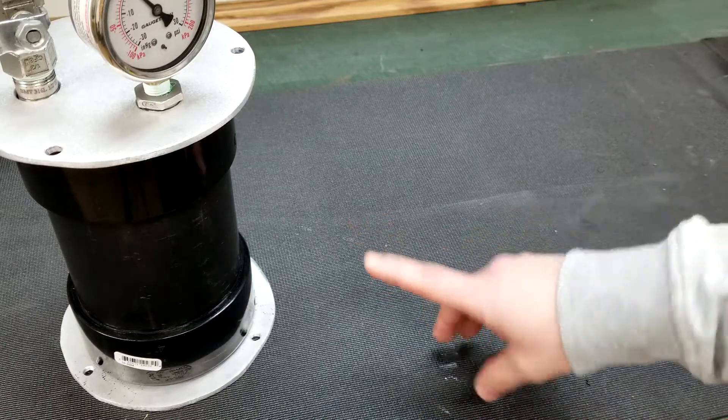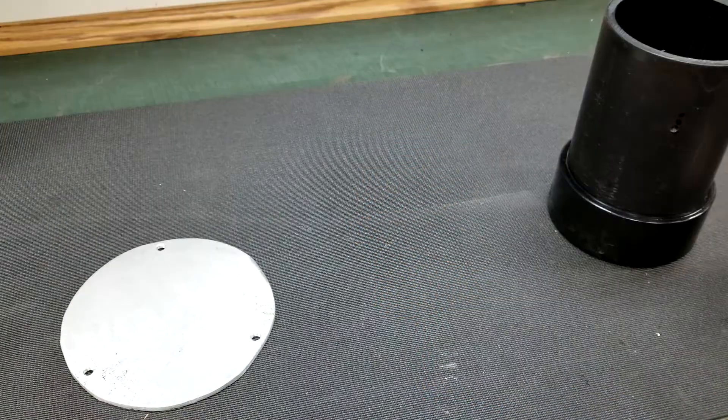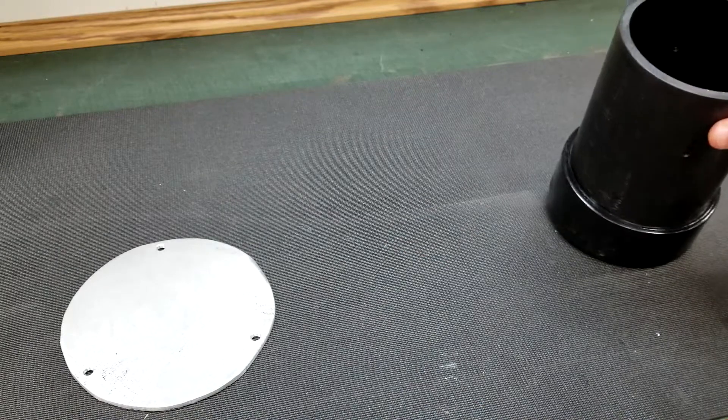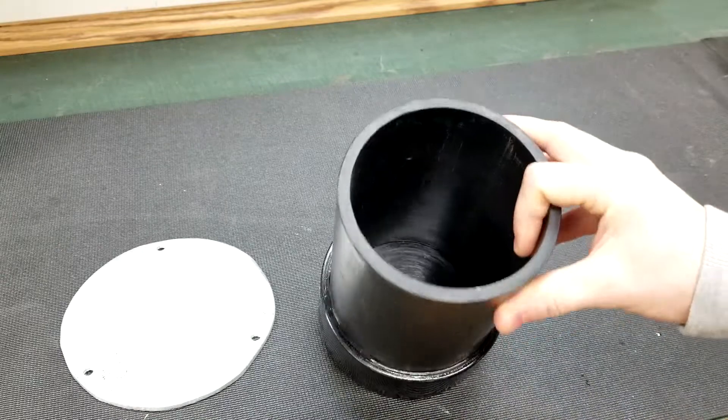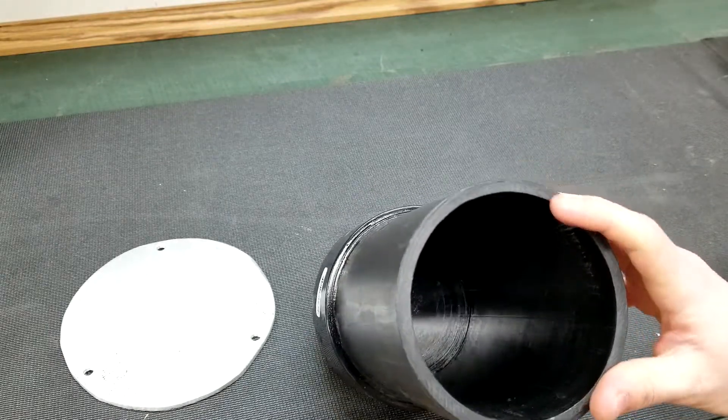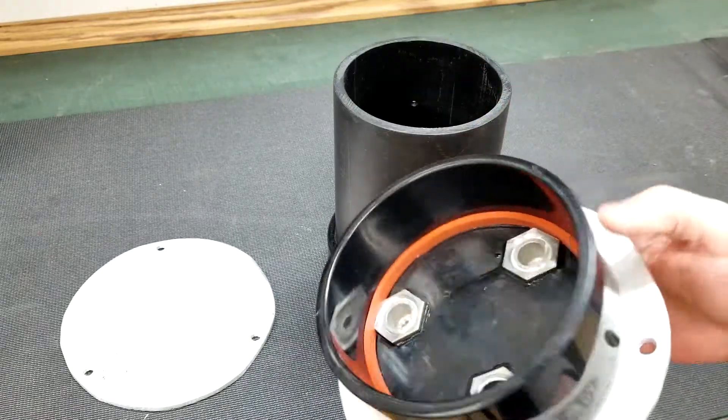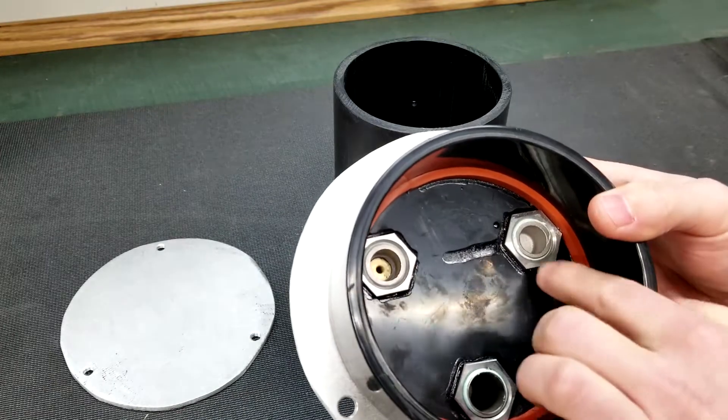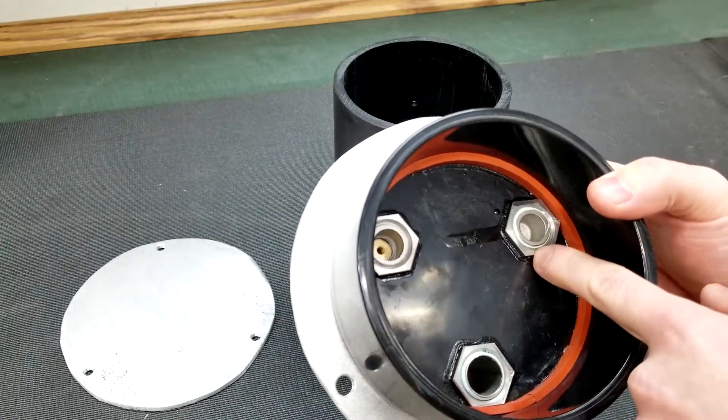The construction of this generator is very simple, although pretty dangerous. You see, it's just a PVC sewer pipe with a cap on it. Now we have another cap which we drilled some holes in, and then we placed these stainless threaded inserts.